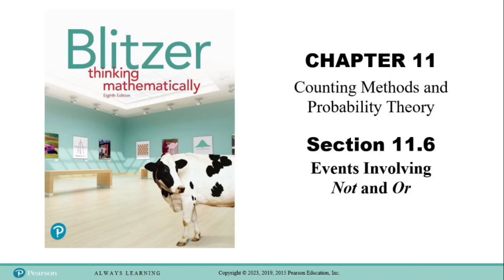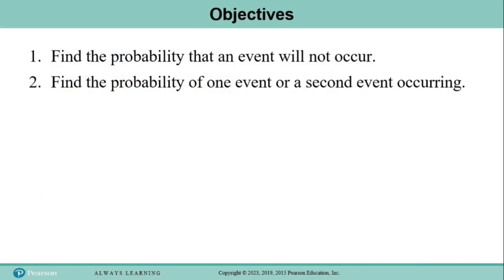Hello again, everybody. Welcome back to Quantitative Reasoning. Today we are in section 11.6, and we're going to be going further into probability, talking today about events involving not and or. We only have two objectives in this section: to find the probability that an event will not occur, and to find the probability of one event or a second event occurring.